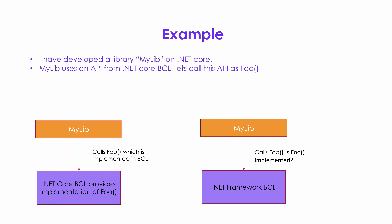Let's try to understand this with an example. Suppose I have developed a library mylib on .NET Core. This library makes a call to Foo API, which is implemented in the base class library of .NET Core. Once this library is developed, I would like developers on .NET Framework, Mono, or Xamarin to also use it. But how do I make sure that this library is going to work on those platforms? If a developer takes this library and it makes a call to Foo API, how do I ensure that Foo API is also present in the base class library of that particular platform — .NET Framework, Mono, or Xamarin?